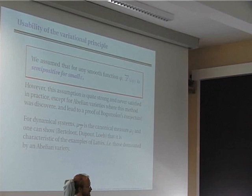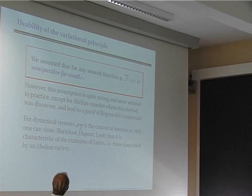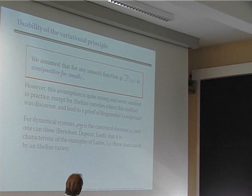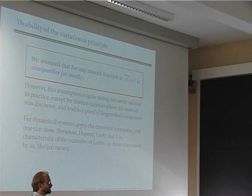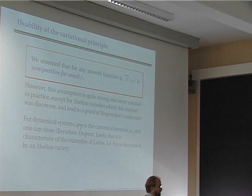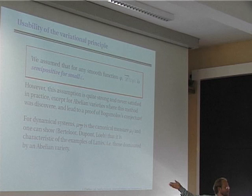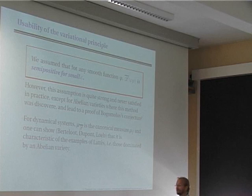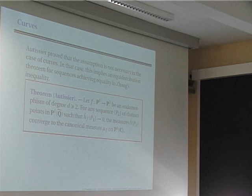For dynamical systems, however, the measure μ_{L̄} is precisely the canonical measure μ_f. Bertelot, Dupont, and Loeb have shown that the positivity of μ_f is characteristic of examples coming from abelian varieties. This means that μ_f is very singular — its support is unlikely to be large, and even if the support is large it is unlikely to be comparable with Lebesgue measure on the support, unless the dynamical system comes from an abelian variety. This was a major obstacle to using Zhang's inequality to prove equidistribution for dynamical systems. Nevertheless, Autissier proved in his thesis around 2000 that the positivity assumption is not necessary for curves, because he could prove an inequality of Hilbert–Samuel type without any positivity assumption.